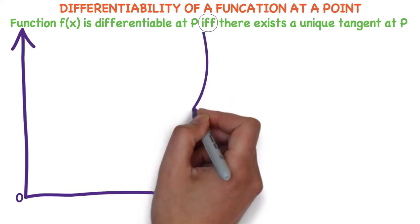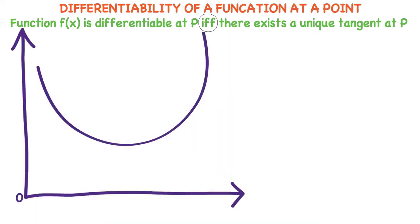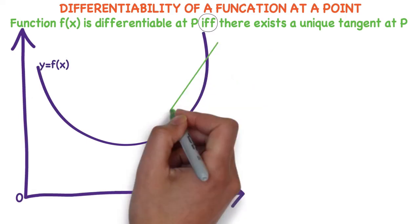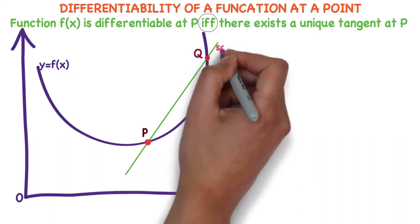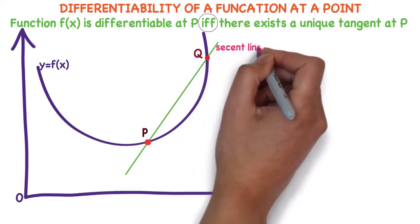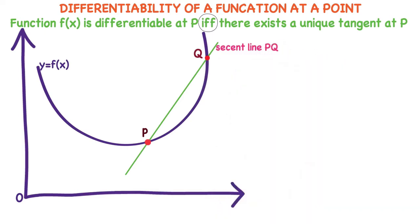Consider the coordinate axis. O is the origin. Take the curve y = f(x). Draw a line — you observe this line cuts the curve at two points. Name them p and q. This line pq is called the secant line pq, since it cuts the curve at two points.